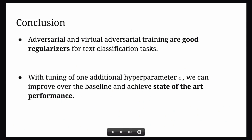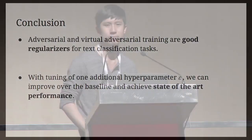In summary, we've introduced ways of using adversarial and virtual adversarial objectives for text classification and shown that they are effective regularizers. By just tuning one additional hyperparameter — the norm of the adversarial perturbation — we can get state-of-the-art performance. We're a bit over time so perhaps we can delay the questions.